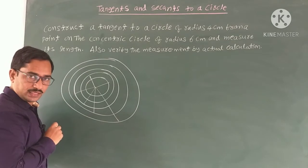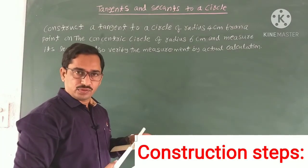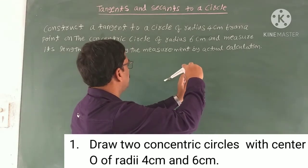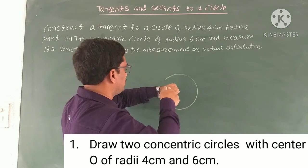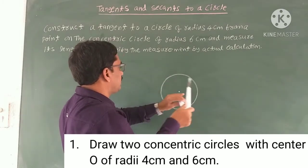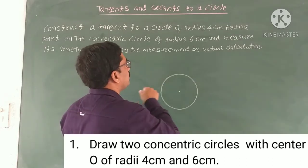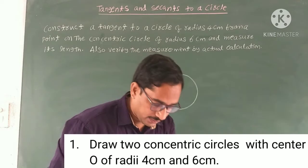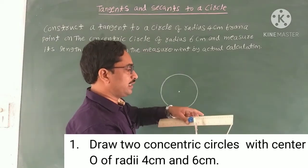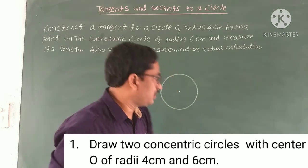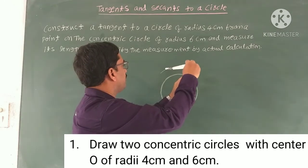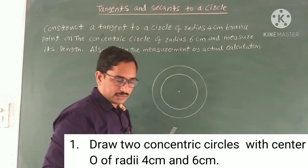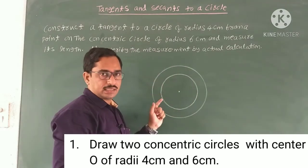So we have to draw a circle of radius 4 cm. First, locate the center and draw a circle of radius 4 cm. Next, take the length of the arc as 6 cm and with the same center draw one more circle of radius 6 cm. So these are the two concentric circles — the first circle of radius 4 cm and the second circle of radius 6 cm.